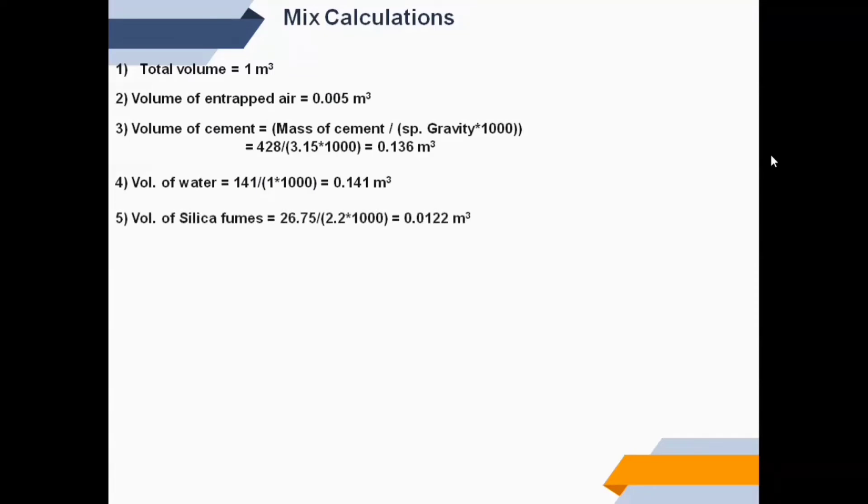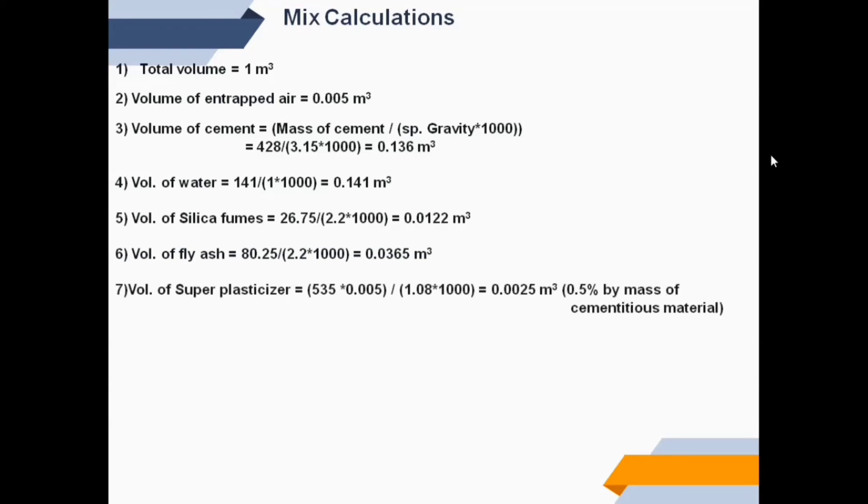Volume of silica fumes is 0.0122 cubic meter. Volume of fly ash equals 0.0365 cubic meter. Volume of superplasticizer equals 0.0025 cubic meter, which is 0.5% by mass of cementitious material. Volume of all-in aggregate equals 0.667 cubic meters.